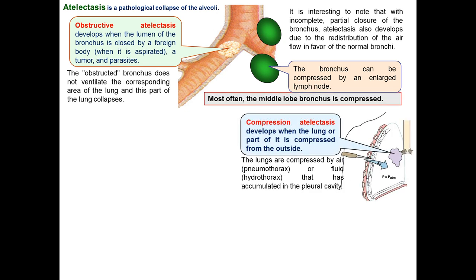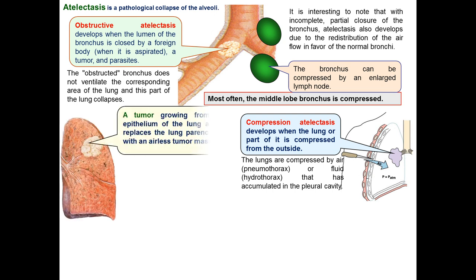Most often the middle lobe bronchus is compressed. Compressive atelectasis develops when the lung or part of it is compressed from the outside. The lungs are compressed by air — pneumothorax — or by fluid — hydrothorax — that has accumulated in the pleural cavity.